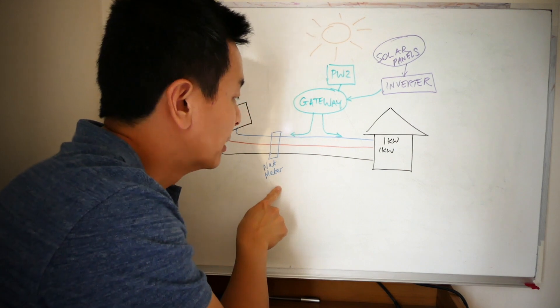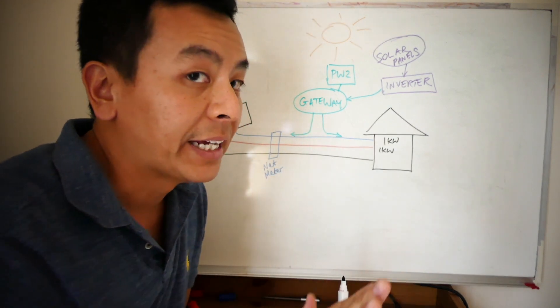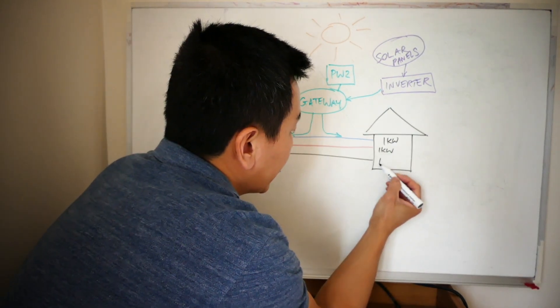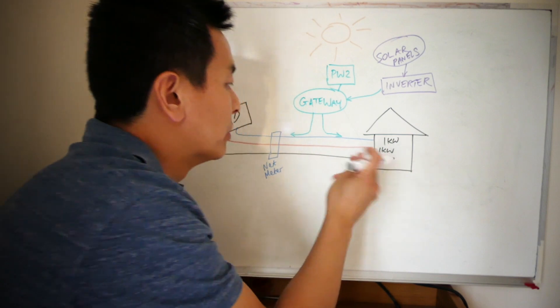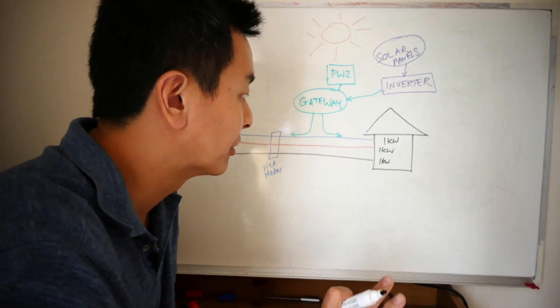And the net meter then goes, 'Okay, I've given you one and we're going to take one back.' That cancels each other out; it doesn't bill the customer. Same thing applies if it has a load on this black phase as well: sends one from the grid, takes one back from the gateway, cancels each other out.